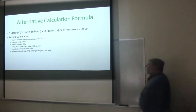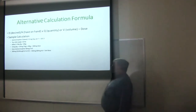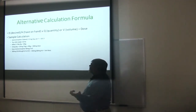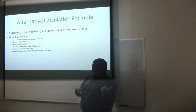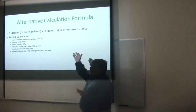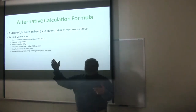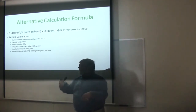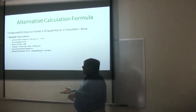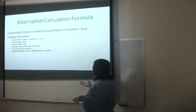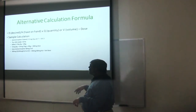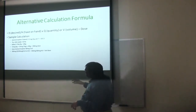You'll also hear people talk about the alternative calculation — 'desired over on-hand' — then times the quantity, whether that quantity is tablets or volume in mLs. That's a very handy easy one to do.